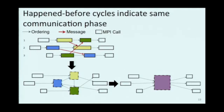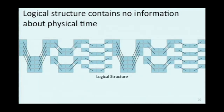That gets us a lot of the way there in MPI. Sometimes we'll also optionally take into account things like call tree information or the belief that all processes should be active during a single phase. Now we have this logical structure, and notice I didn't really use any physical time information in creating it — that makes this process really robust. However, we want to look at this trace to understand something about performance, and that's hard when I've taken all the physical time data and thrown it away. So we're going to bring that back in the form of metrics that use physical time information together with this logical structure.